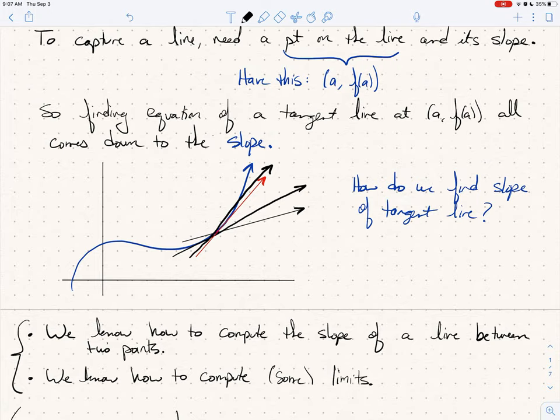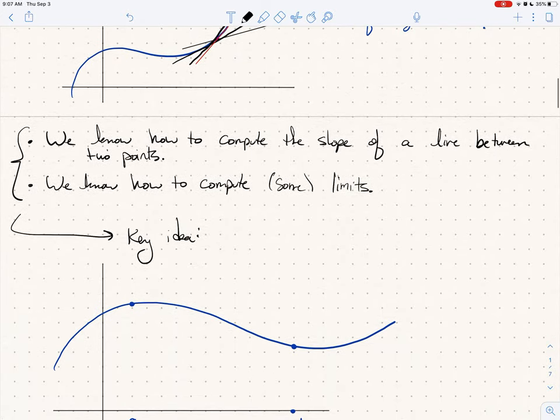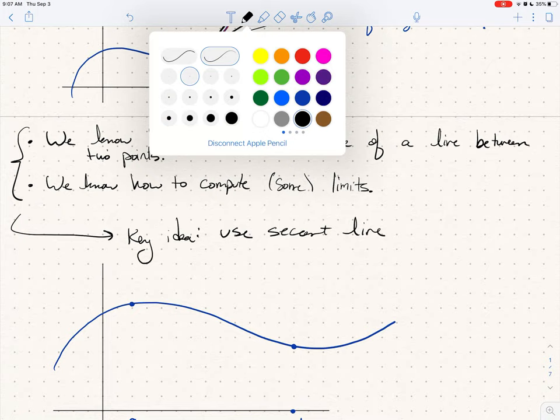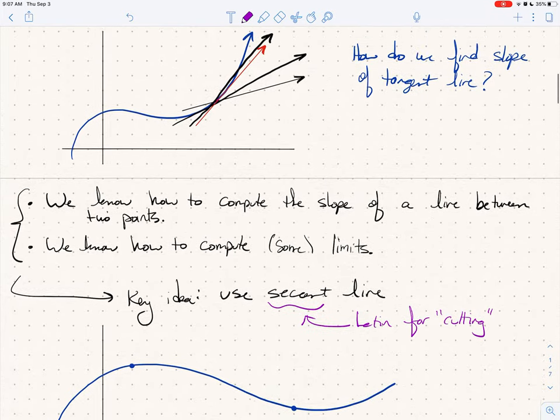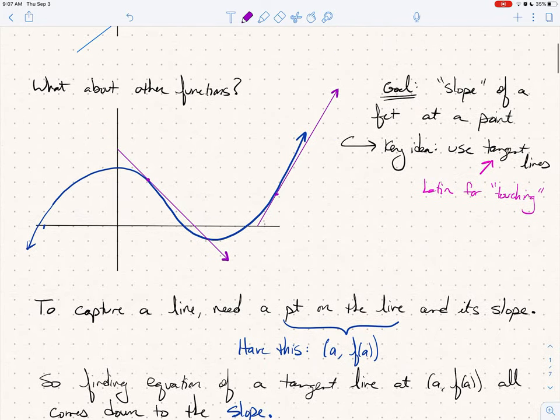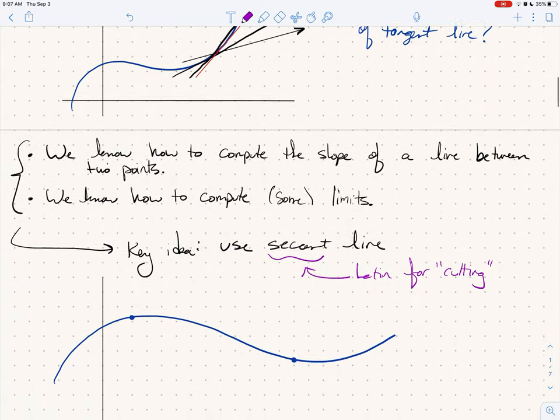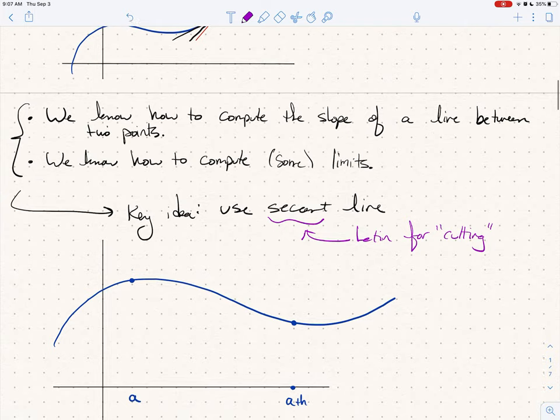And so putting those two things together, our key idea that we're going to use is secant lines. What on earth is a secant line? Well, secant, again, is Latin for cutting. So we have the cutting line. It's going to cut the function. We're interested in the touching line, the tangent line. And this goes back to the beginning of the course when I introduced calculus, the very first video.